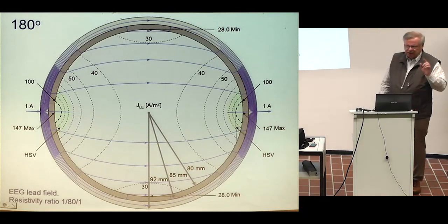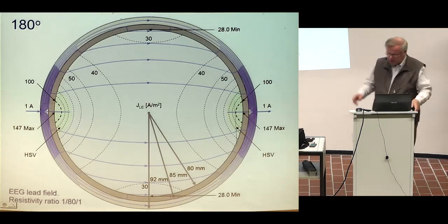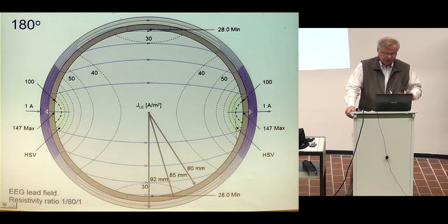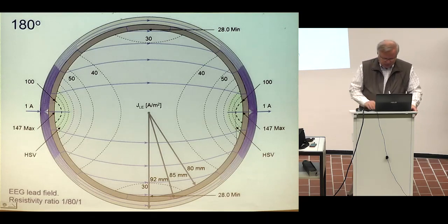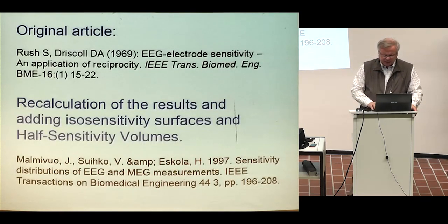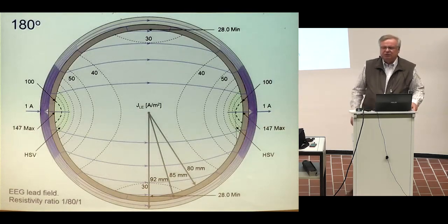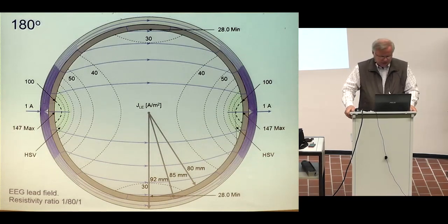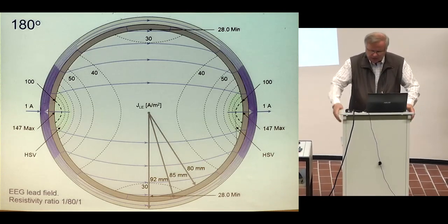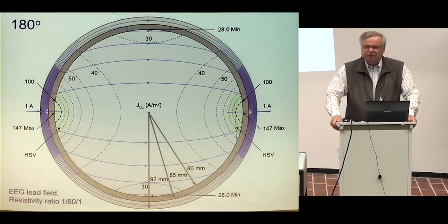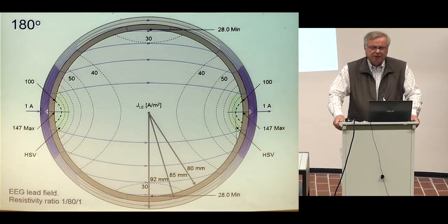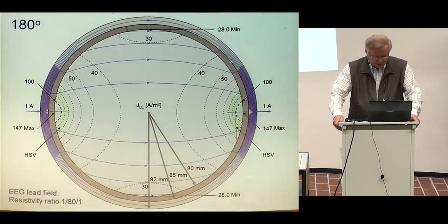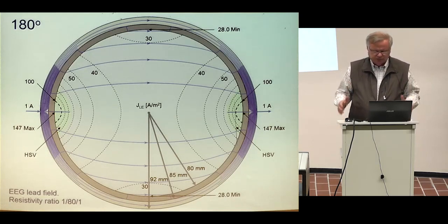This is an interesting fundamental error in this work — I do not blame Rush and Driscoll. The main purpose of the paper was to derive the equations to solve this problem, and with those equations you may calculate using whichever resistivity ratios you want. They got the number 80 from some earlier experiment and did not pay too much attention to the resistivity values. Surprisingly, this resistivity ratio existed in the literature for over 30 years.